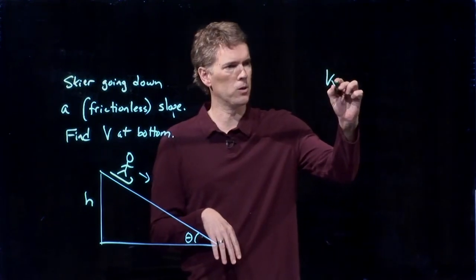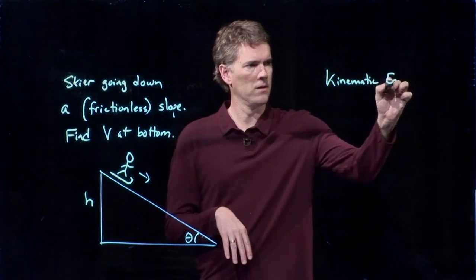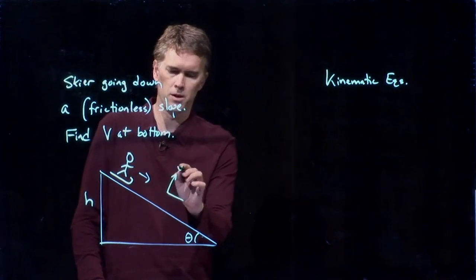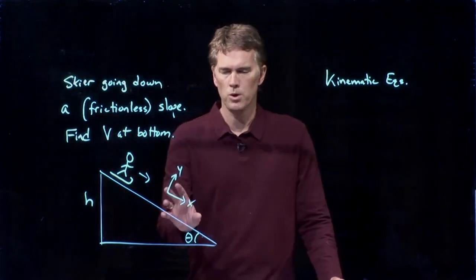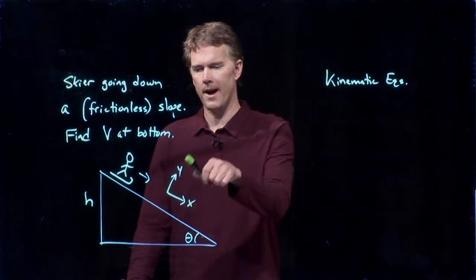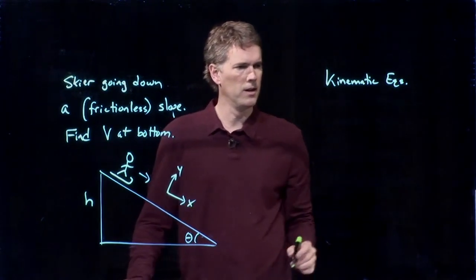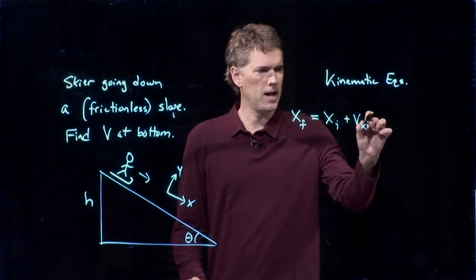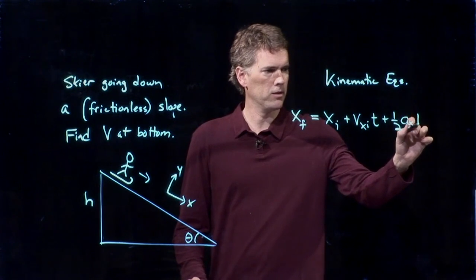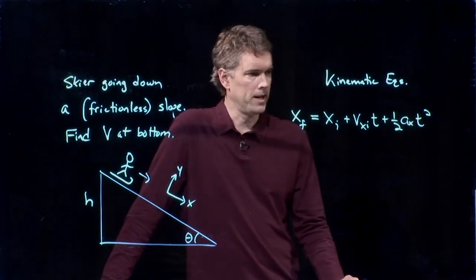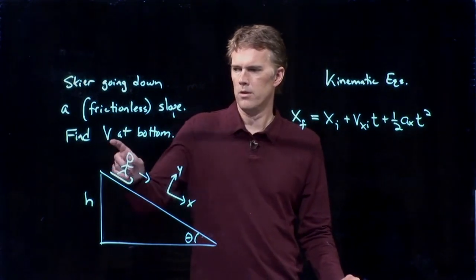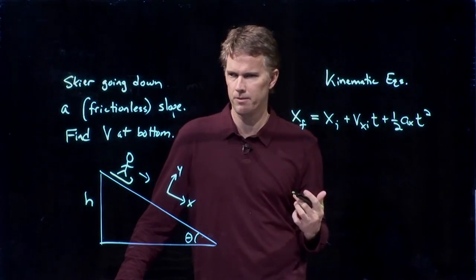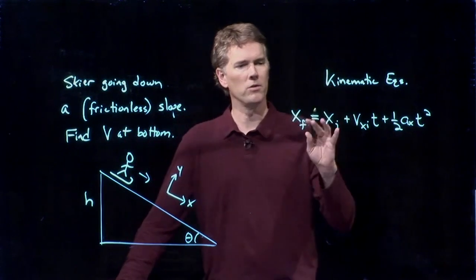So if I think about the kinematic equations, what can I say? Well anytime we're dealing with a slope like this, we usually want to go to a rotated coordinate system. And if I go to a rotated coordinate system like this, I'm not really worried about the y direction, I'm only worried about the x direction. And so I can simplify this to one simple equation. x final equals x initial plus vx initial times t plus one half a sub x t squared. That looks like it might help us. Except if we're looking for v at the bottom, we don't really have v at the bottom in here. So let's go back to our kinematic equations and let's look at a different one.